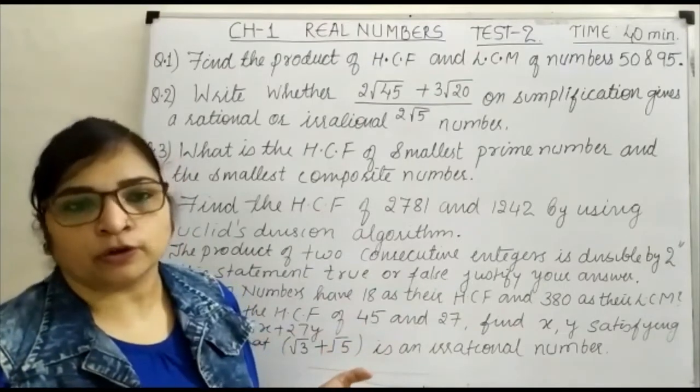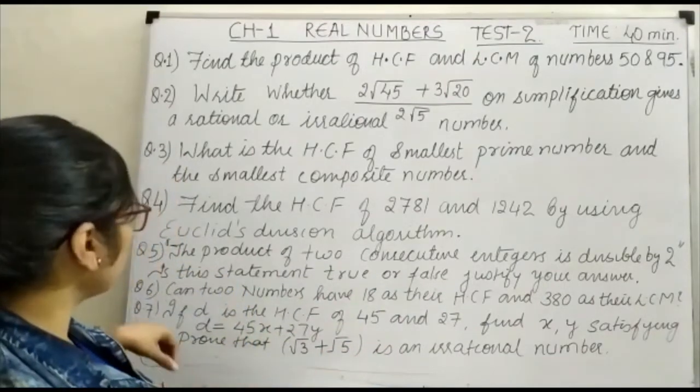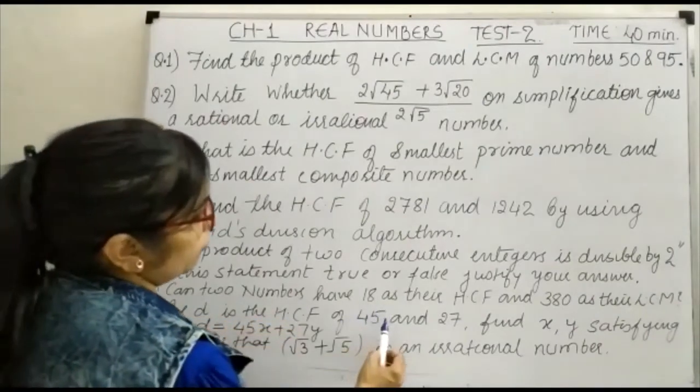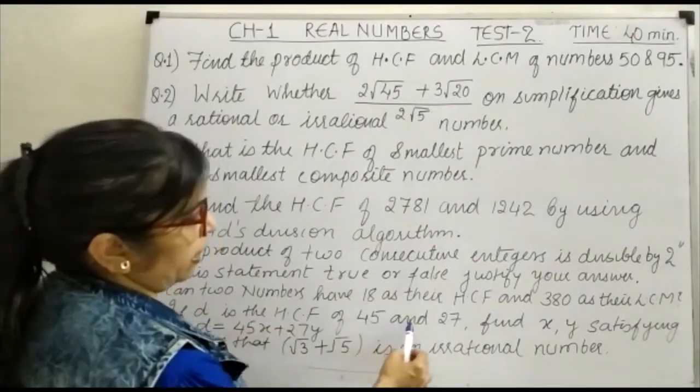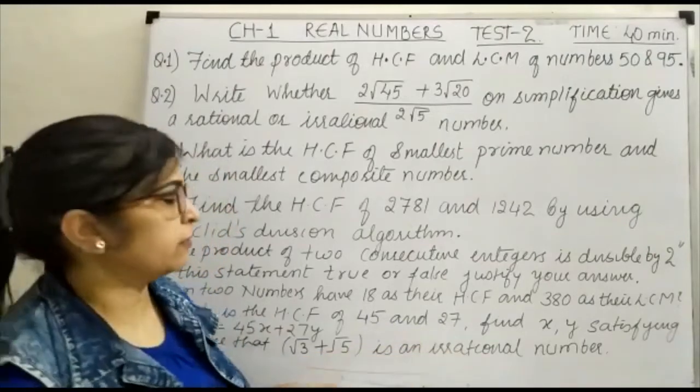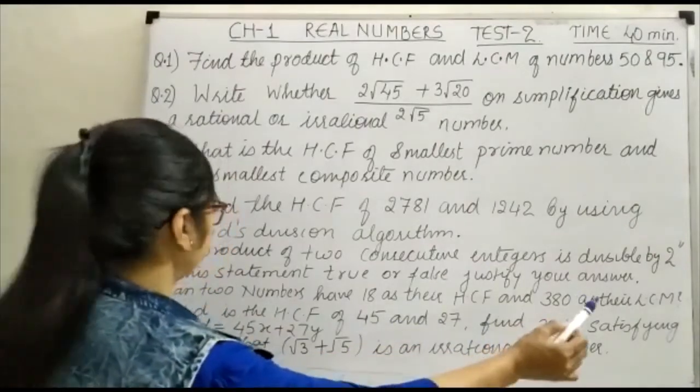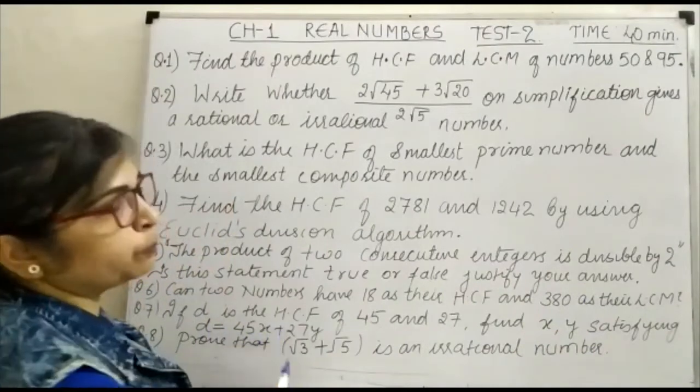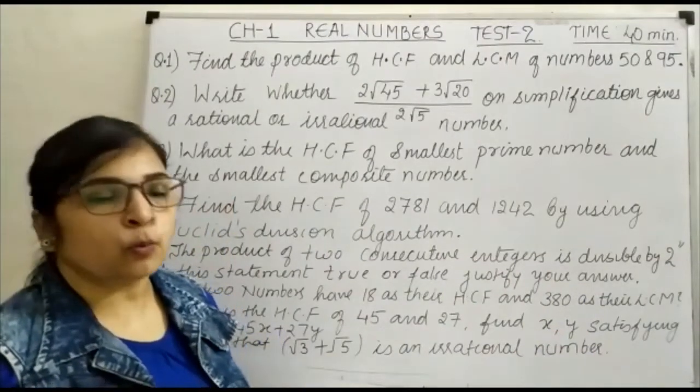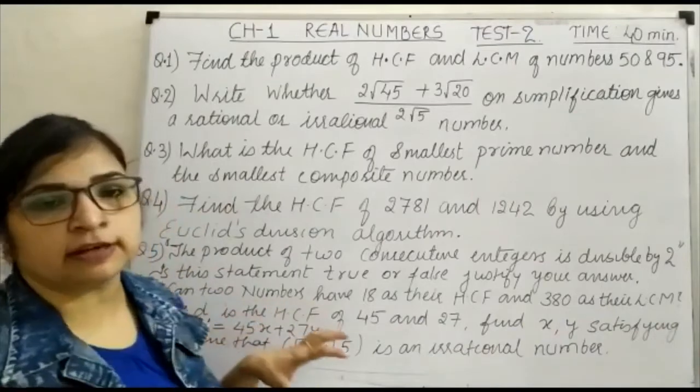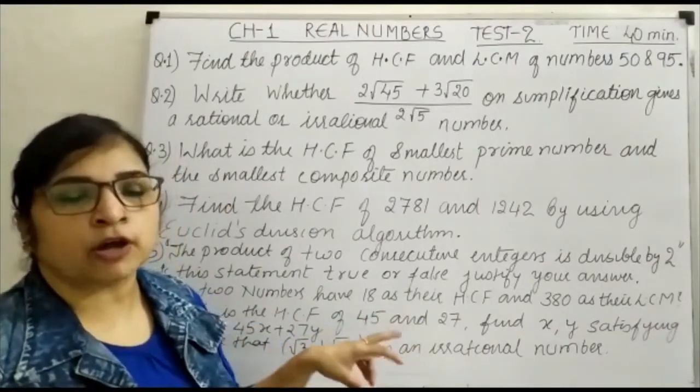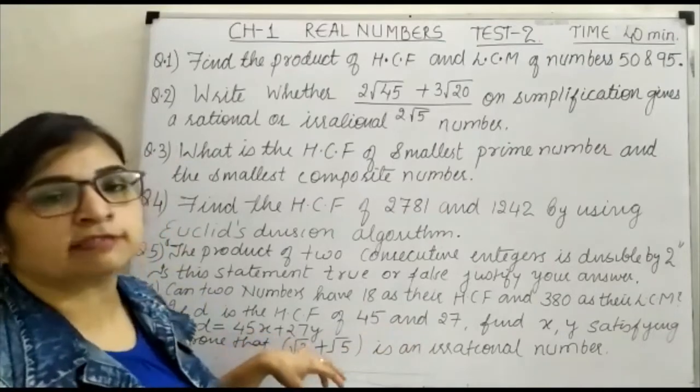Question number 7: if D is the HCF of 45 and 27, find X, Y satisfying D = 45X + 27Y. So their HCF is written in the linear combination of the 2 numbers. You have to find out the values of X and Y.